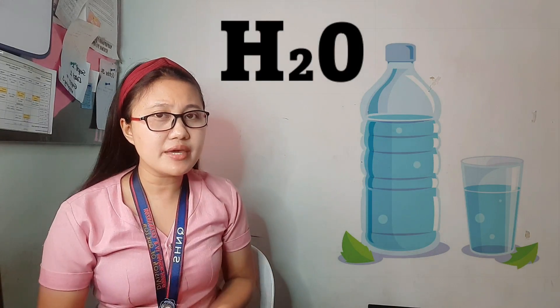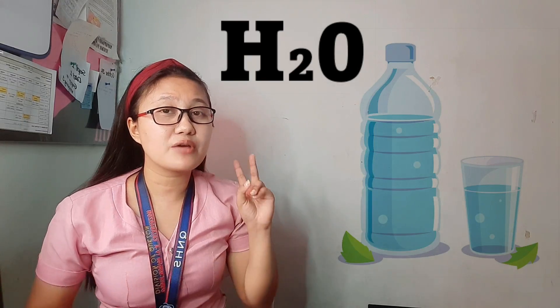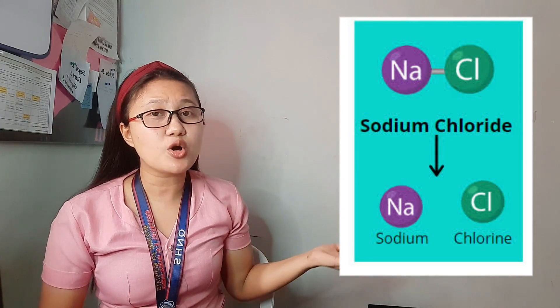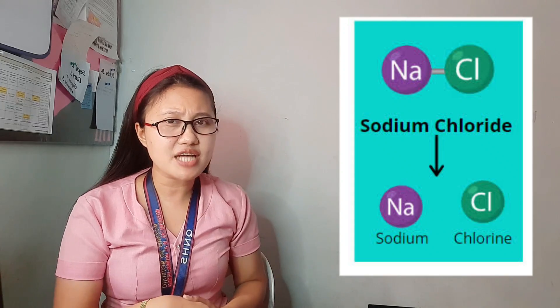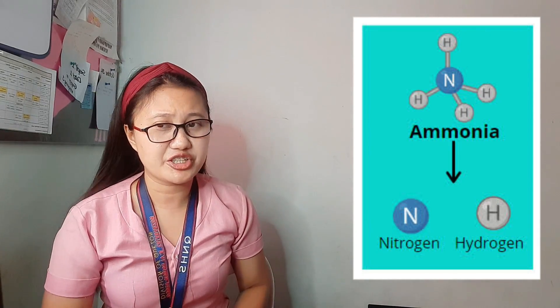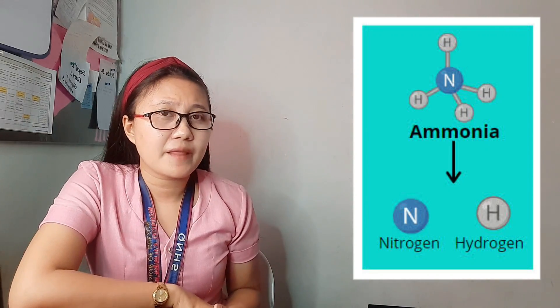Unlike elements, which are limited to 118 in the periodic table, compounds are unlimited. Examples of compounds: water is H₂O — it has two hydrogen atoms and one oxygen atom, making it a compound because it is a combination of more than one type of atom. Another example is sodium chloride, NaCl — sodium plus chlorine. Another example is ammonia, NH₄ — one nitrogen atom and four hydrogen atoms. Those are examples of compounds.